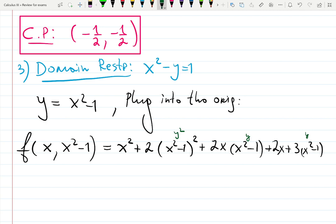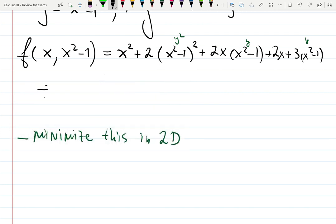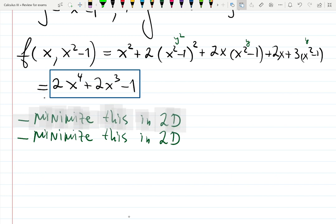We want to find the minimum of this function and that is already a calculus one class. Minimize this in 2D, as you can see there is only a function of x. How did we do that? We find a derivative of this function. So we could first simplify by expanding everything. You will get 2x to the 4th plus 2x cubed minus 1. Pause and do all the work and compare with my answer.